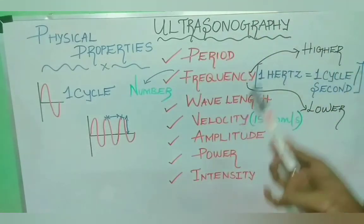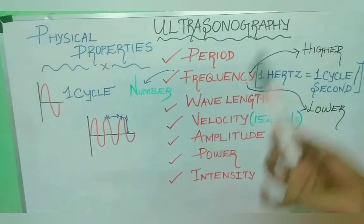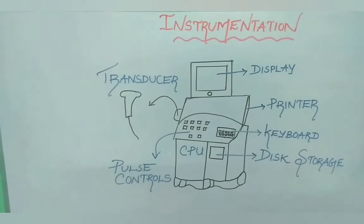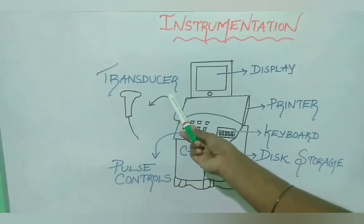All these are properties of ultrasound waves. A basic ultrasound machine has the following parts: a display printer, keyboard, disk storage, central processing unit, pulse controls and a transducer probe.